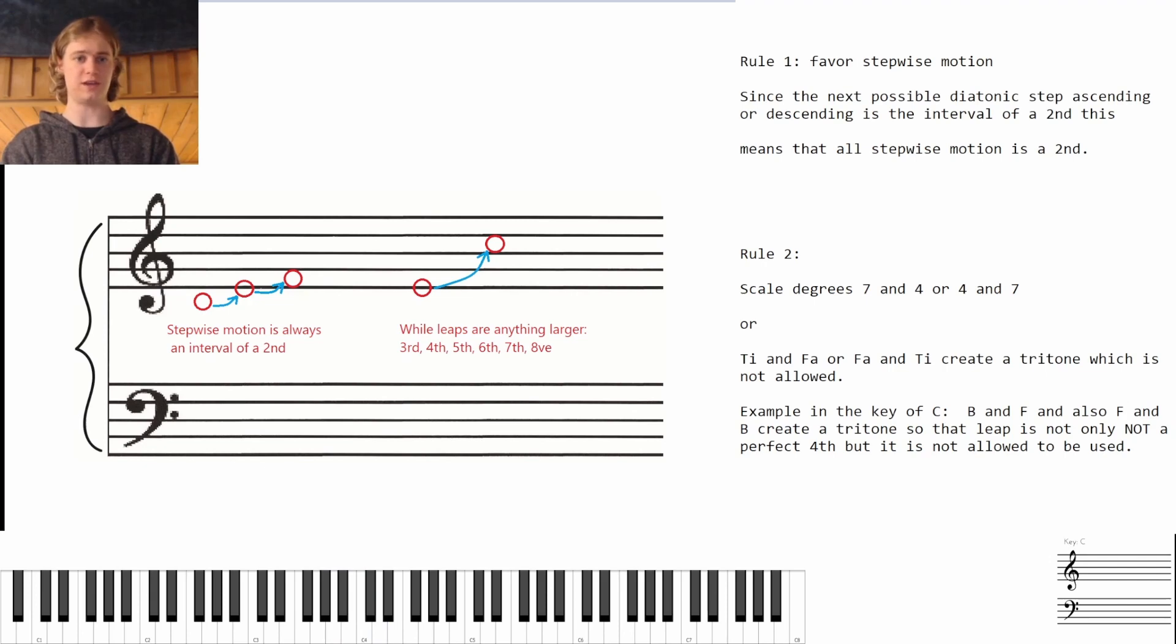So leaps on the other hand, as you can see this is showing an E to a C, are anything larger: a third, fourth, fifth, sixth, seventh, and an octave. While on the other hand you can think about the stepwise motion as just the interval of a second since it's just going to the next possible note, it's creating a second.